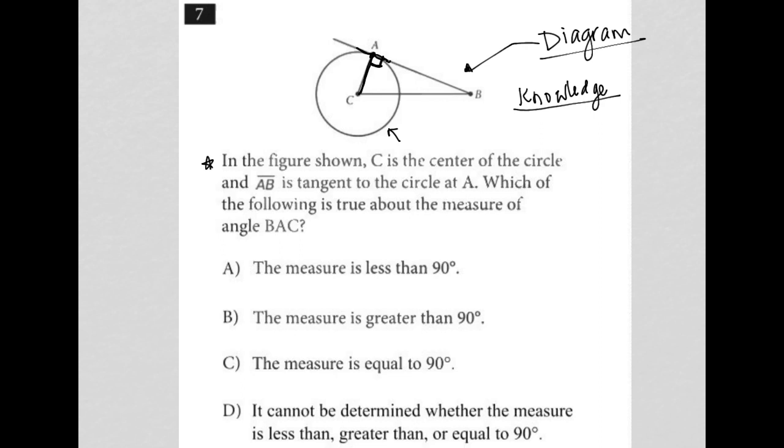So because that's the case, then the answer must be, where is it? So choice C, the measure is equal to 90 degrees, must be the correct answer.